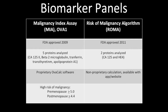If the OVA1 score is greater than or equal to 5.0 for premenopausal patients, or greater than or equal to 4.4 for postmenopausal patients, they are at high risk for malignancy. If the ROMA score is greater than or equal to 1.31 for premenopausal patients, or greater than or equal to 2.77 for postmenopausal patients, they are at high risk of malignancy.